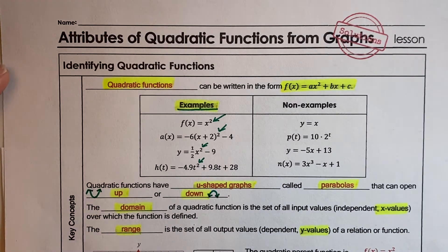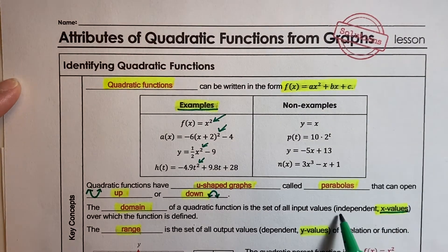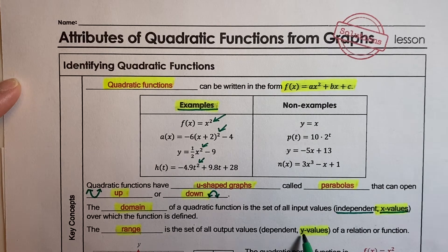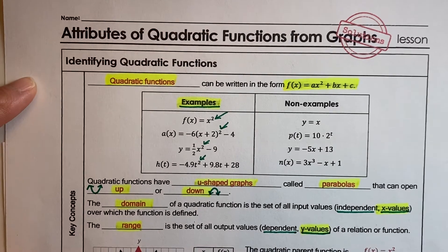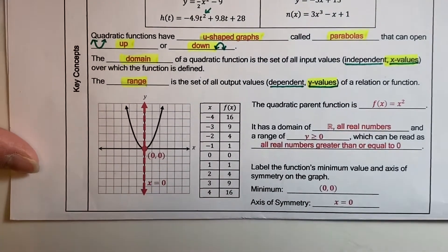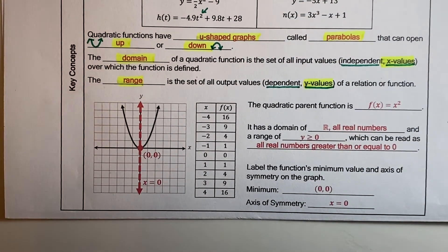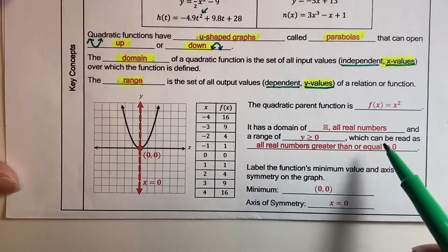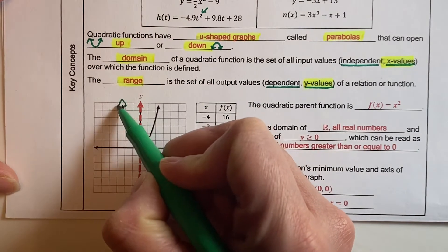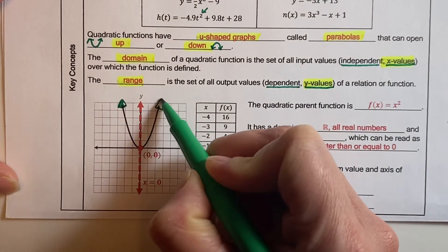The domain will be the set of all the x values, and it's the independent variable. The range will be all the set of y values, and it's the dependent variable. We learned about the parent function f of x equals x squared for quadratic functions, and we know that the domain is all real numbers because there are arrows at the end of your graph, so none of the x's are restricted.